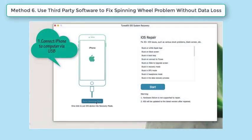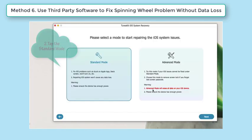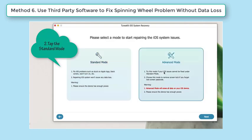If all the above solutions are not working, you should consider using ToonsKit iOS System Recovery tool. There are many tools on the internet today, but some of them are unreliable. ToonsKit is a well-designed, up-to-standard tool to help you solve the spinning wheel problem without necessarily losing your data. ToonsKit guarantees 100% fixing as well as data safety.